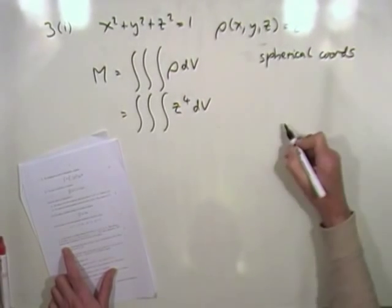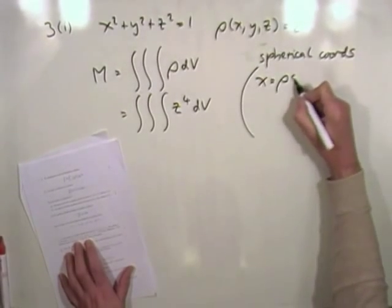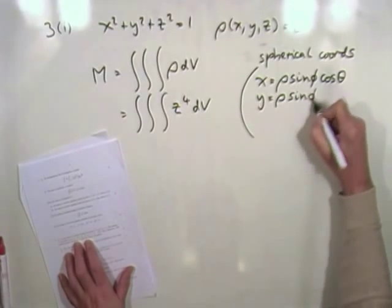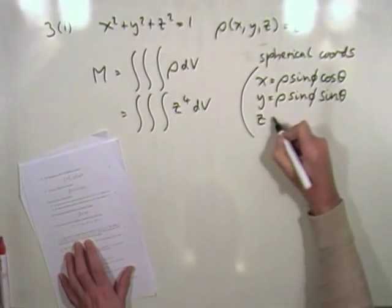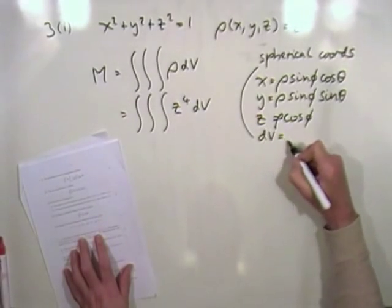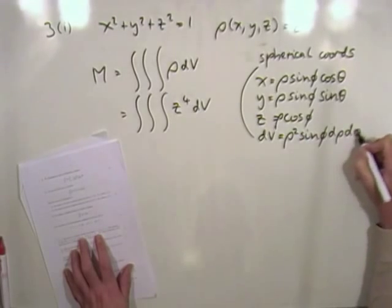So in spherical coordinates, the components would be, x would be rho, unfortunately again, sine phi cos theta. y is rho sine phi sine theta, and z is rho cos phi. Then, that volume element, that volume element's going to be rho squared sine phi, and then d rho, d phi, d theta.